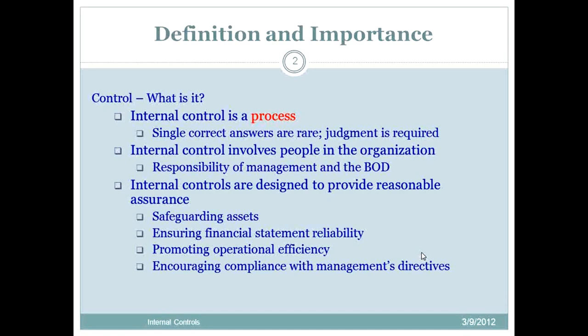They don't want the auditors to find problems with internal controls, because they realize it's going to impact the amount of reliance the auditor can place on internal controls, and then it's going to impact the amount of evidence and extend audit procedures if they can't rely on it. It's a judgment process — there are rarely correct answers. For example, if you ship goods you'd want to see a shipping document, but a lot of it is judgment.